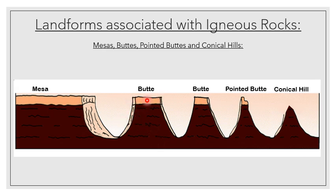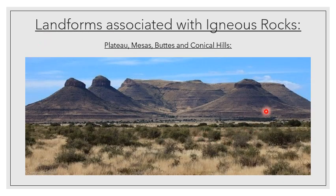Anything that has a width less than the height can be considered a butte. Here we have another example of a butte. The only time we have a pointed butte is when it makes a really thin point — it is still a butte. When no cap rock is left on top, we start forming a conical hill, which will erode and weather a lot quicker, and eventually it'll form flat ground. A very common South African example is the Three Sisters — we've got a mesa at the back because its width is a lot bigger than the height, and the three sisters themselves are different shaped and sized buttes.